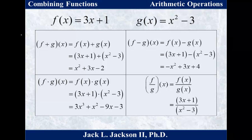Moving on, f times g: we use the distributive property. x squared times 3x is 3x cubed, x squared times 1 is x squared, 3x times negative 3 is negative 9x, and 1 times negative 3 is negative 3. We can expand it as 3x cubed plus x squared minus 9x minus 3, or leave it in factored form — either way these last two are equivalent.